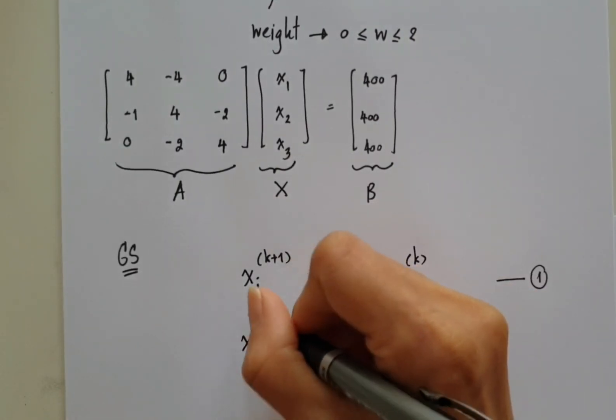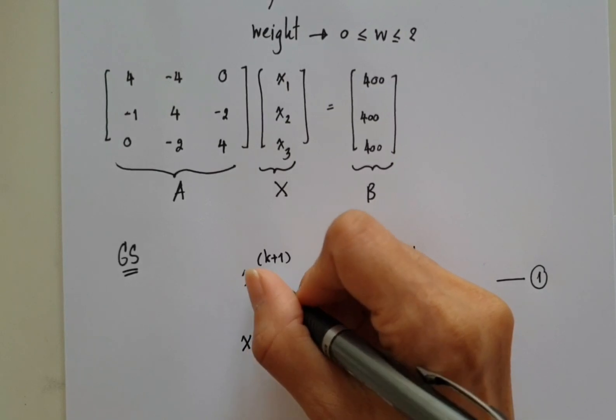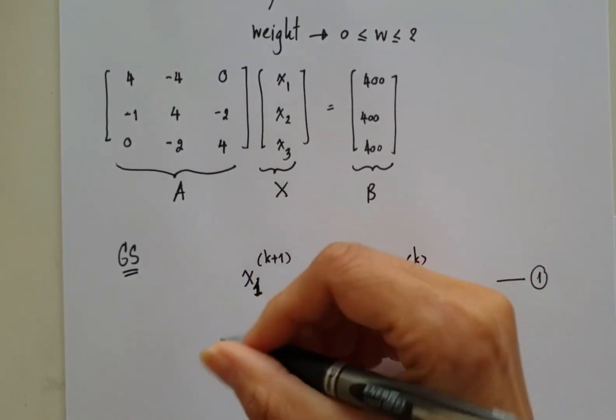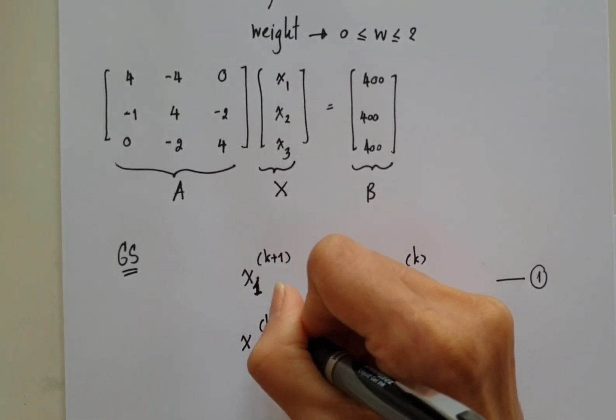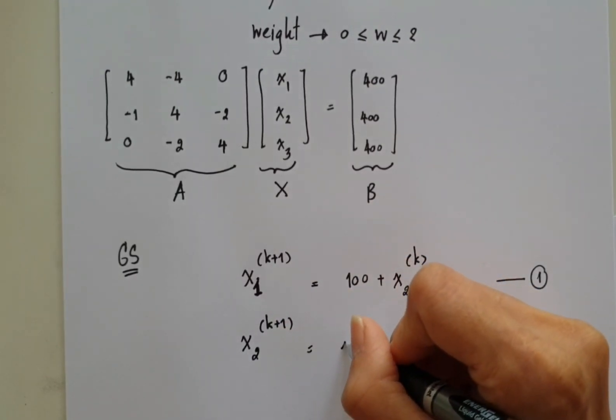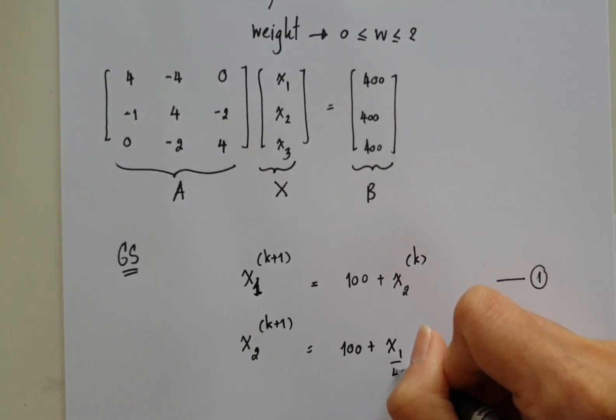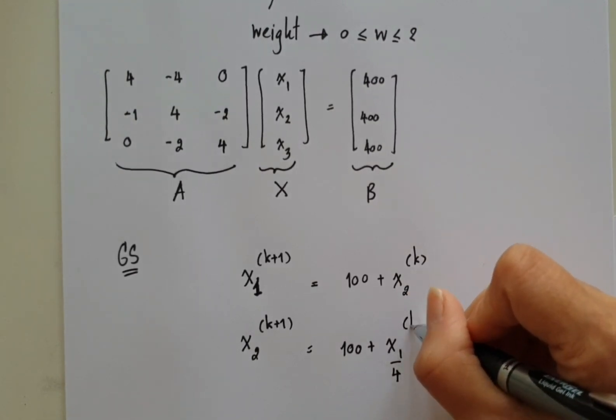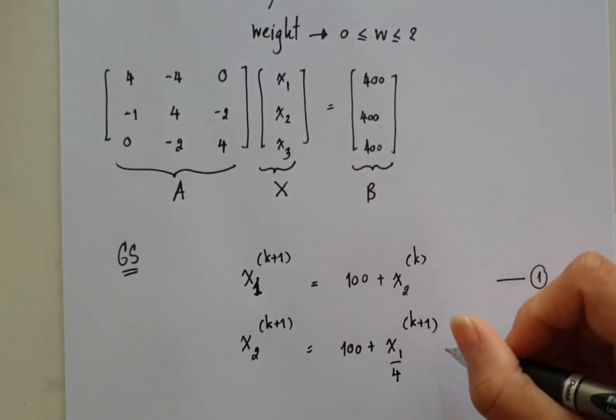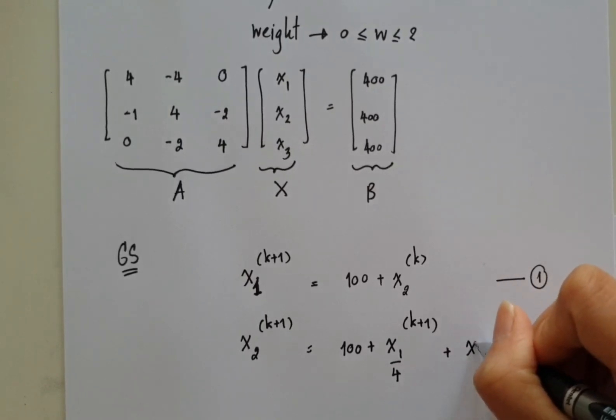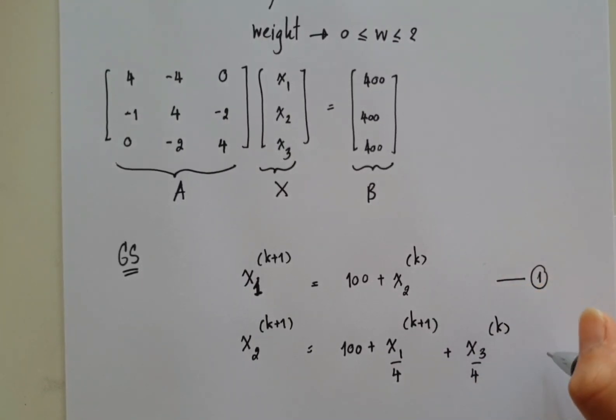And x_2 k+1 would equal to 100 plus x_1 over 4 at k+1 iteration plus x_3 over 4 at the k+1 iteration. This is equation 2.